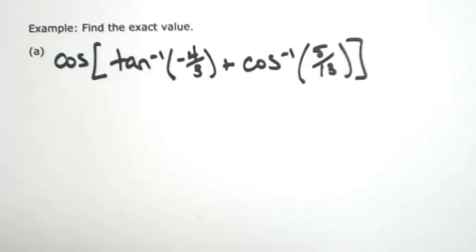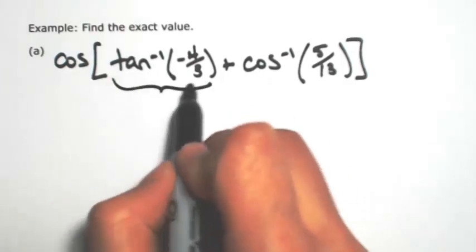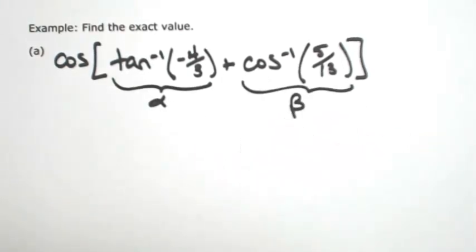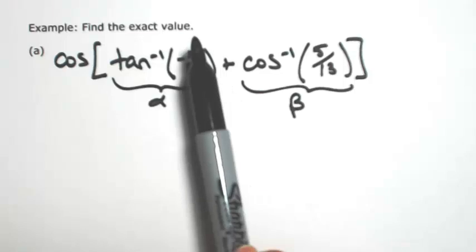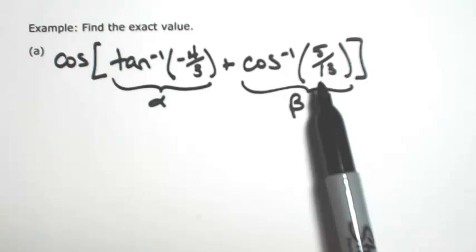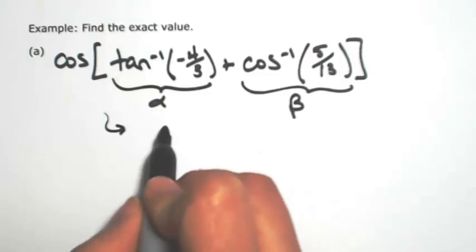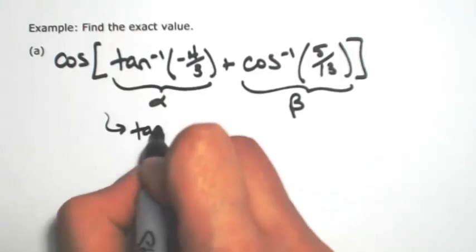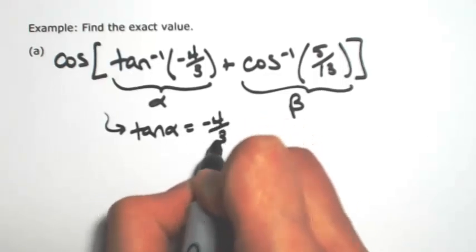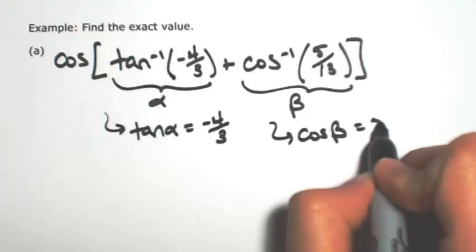The first thing to realize is that inverses are just angles, so I have two angles inside of this. Let me give them two different names — call them alpha and beta. As long as the domains are satisfied: for inverse tangent the domain is all real numbers, so negative 4 thirds is fine. For inverse cosine the domain is negative 1 to 1, so we're good. By the definition of the inverses, if alpha is the inverse tangent of negative 4 thirds, then tangent of alpha equals negative 4 thirds. If beta is the inverse cosine of 5 thirteenths, then cosine of beta equals 5 thirteenths.